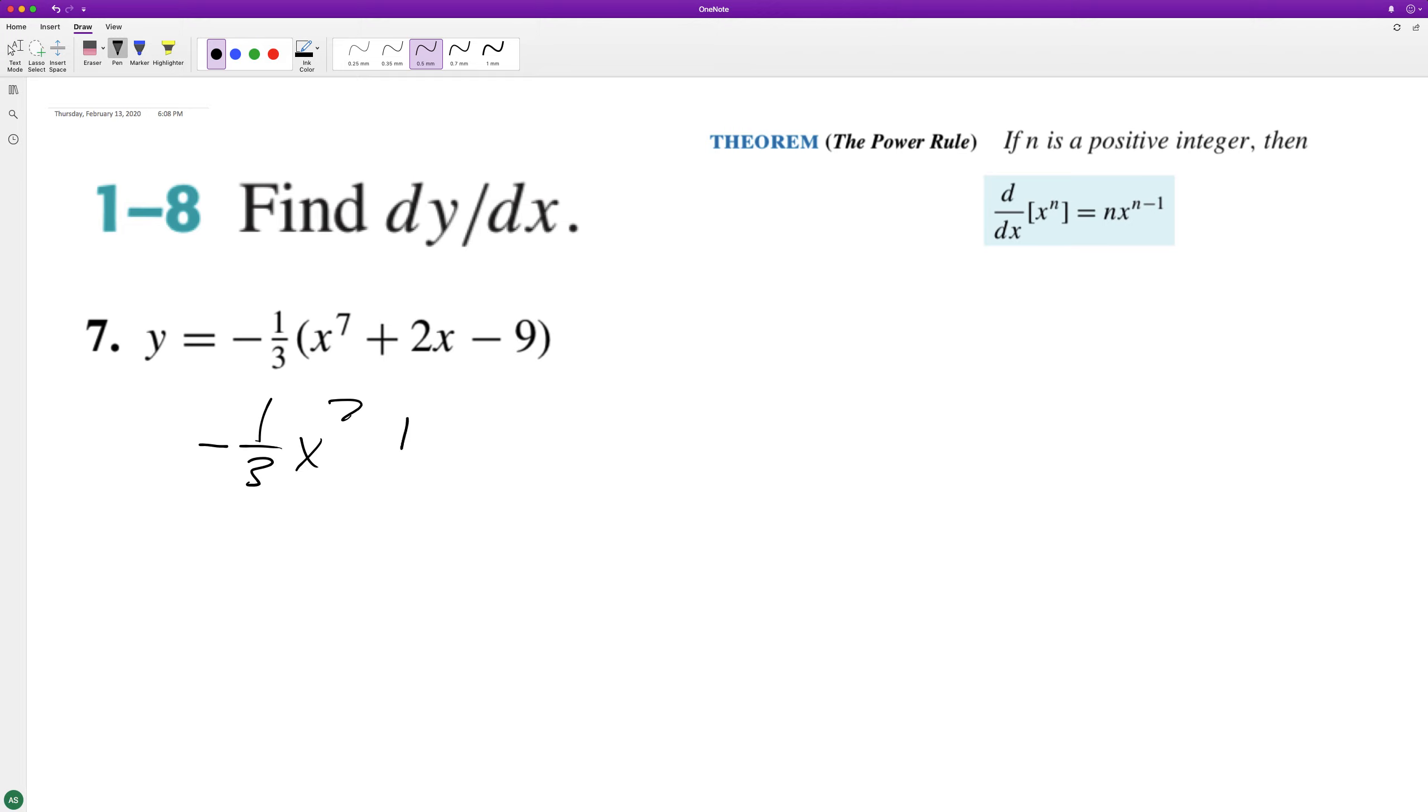So we have negative one-third x raised to the seventh plus—actually, it's going to be minus two over three (one-third times two) x minus